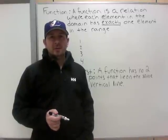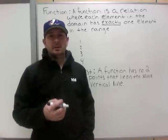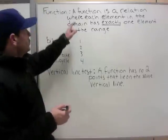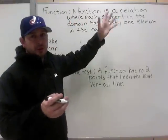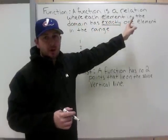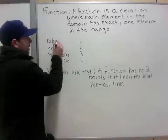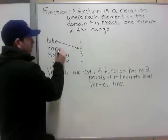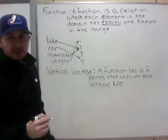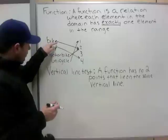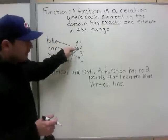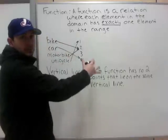The first learning intention involves looking at a graph to determine if it is a function or not. Let's look at the function definition we worked with before. A function is a relationship, or relation, where each element in the domain has exactly one element in the range. An example: a bike has two tires, a car has four tires, a motorbike has two tires, a unicycle has one tire. This was called an arrow diagram, and the domain — always the first set — has only one arrow coming off of it, so this represents a function.